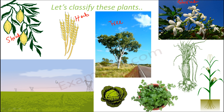A paddy field — where rice comes from — has small-sized plants, so paddy is an example of a herb. Cabbage and coriander are also herbs; coriander is a small plant that can even grow in a small pot. Onion and maize are also herbs. Most of the small plants seen here are classified as herbs, whereas the eucalyptus is a tree, and lemon and jasmine are shrubs.